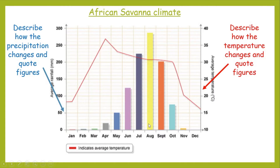50 millimetres or less — virtually nothing for five months of the year, nearly half the year with virtually no precipitation at all. You then get a very rapidly increasing level of precipitation towards the height of summer, and it then reduces again. So you've got a wet season from June to October, and the rest of the year is pretty dry, or arid — we would use the word arid.